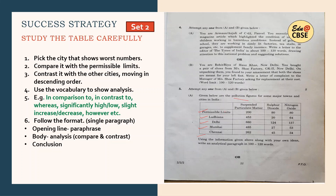Now, before you start writing, it is important that you do a little calculation. For example, calculate how much suspended particulate matter is more in the case of Ludhiana — 453 minus 200. For Delhi, it is 480 points more. For Mumbai, it is 285 points more. And for Chennai, it is 62 points more. Similarly for sulfur dioxide — the minus sign shows it is 60 points less than the permissible limit. Nitrogen dioxide for Ludhiana is 16 points less. For Delhi, it is 44 more, and nitrogen oxide is also more. Mumbai and Chennai are in minus, so less than permissible limit. This little calculation done beforehand makes it easier to write.